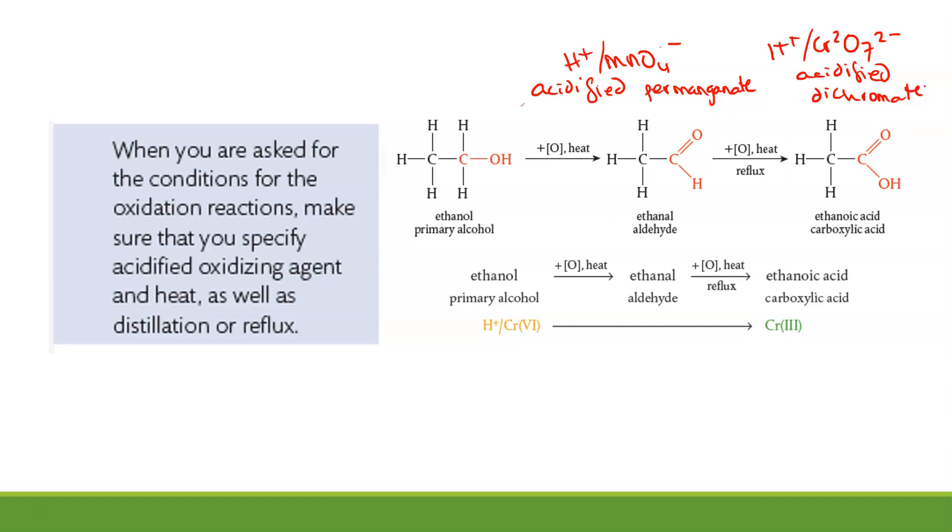Either of these are strong enough oxidizing agents to oxidize our primary alcohols through to carboxylic acids. So we need to have our acidified oxidizing agent. We need heat, and we need to specify if it is being distilled, which is the aldehyde, or refluxed, which is going to take us through to the carboxylic acid.